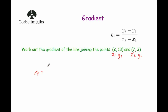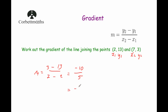So m equals y2 minus y1 over x2 minus x1, which is 3 minus 13 over 7 minus 2. That gives us negative 10 over 5, and negative 10 divided by 5 gives us negative 2. So the gradient of the line joining these two points is negative 2.